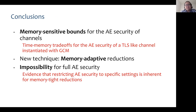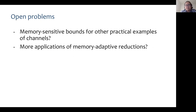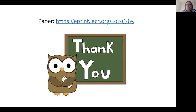To conclude, in this work we proved memory-sensitive bounds for AE security of channels and subsequently time-memory tradeoffs for the AE security of a TLS-like channel. We introduced a new technique of proving memory-tightness where the memory of the reduction depends on the memory of the underlying adversary — this technique might be of independent interest. Additionally, we proved the impossibility of a memory-tight reduction in the most general setting, providing evidence that restrictions might be necessary. Open problems include proving memory-sensitive bounds for other practical channel examples and finding new applications of memory-adaptive reductions. The full version of our paper is available on ePrint. Thank you.